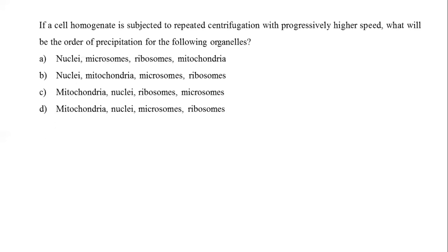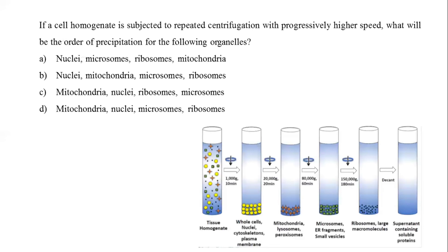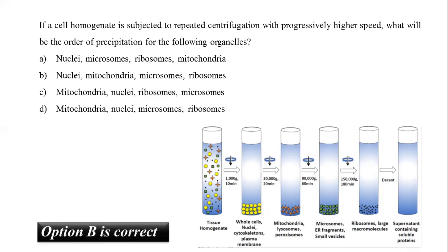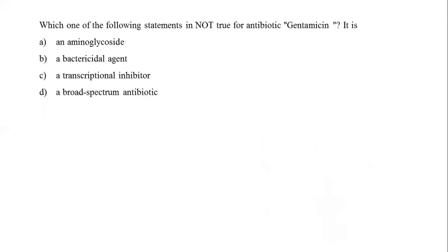If a cell homogenate is subjected to repeated centrifugation with progressively higher speed, the order of organelle precipitation is: nucleus first, followed by mitochondria, lysosomes, peroxisomes, then microsomes and ER fragments, and finally ribosomes and large macromolecules. The correct answer is nuclei, mitochondria, microsomes — option B.